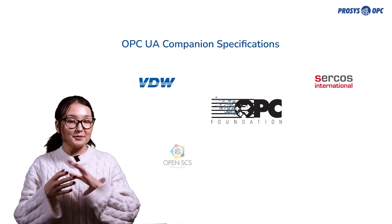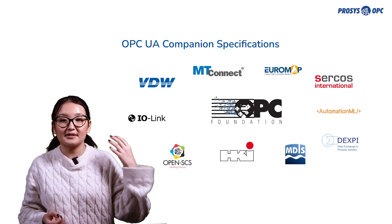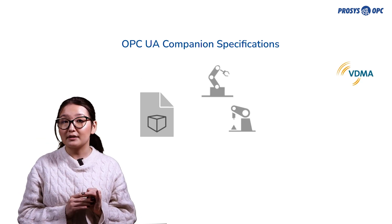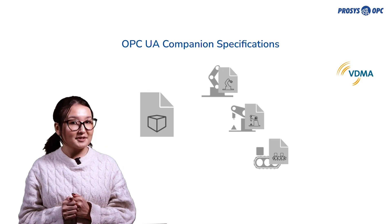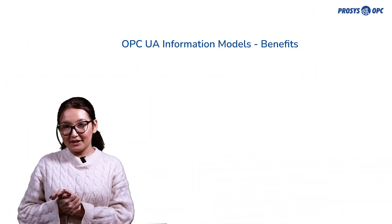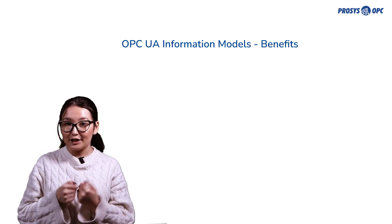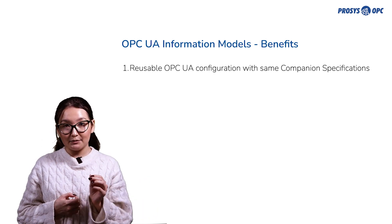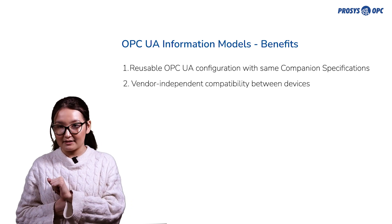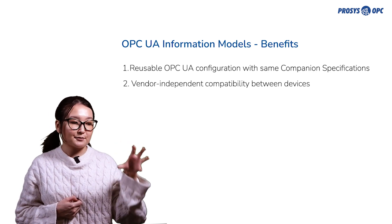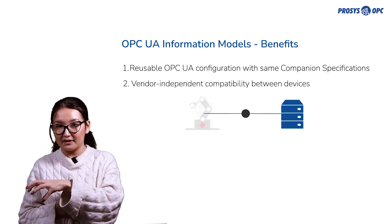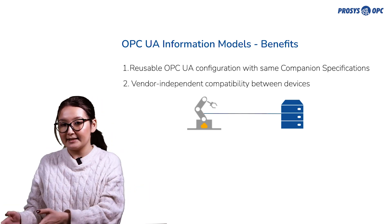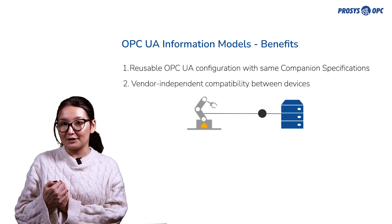Since the beginning, OPC Foundation has worked with different organizations to produce and standardize information models for various industrial domains, such as robotics, machine vision, and plug-and-produce machines. And this is what we call companion specifications. The benefit is that you can use the same OPC UA configuration for every machine with the same companion specification. The second benefit is vendor-independent compatibility between devices, meaning you can replace a device from one vendor with a device from another vendor without disrupting any OPC UA connection, because the corresponding values are located in the exact same place in the information model hierarchy. And this is what we call plug-and-produce.